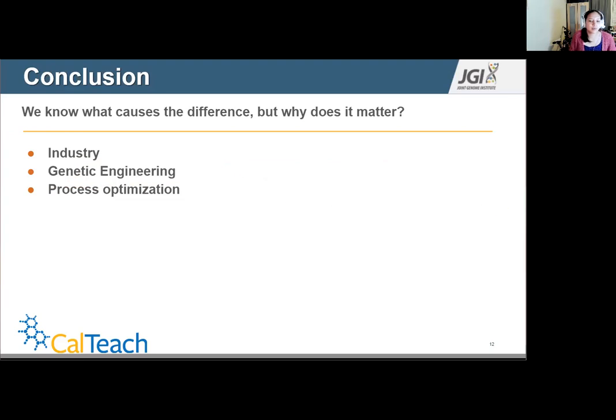Lastly, we have process optimization. And this is an industry term for efficiency. Whether you're making beer, producing biofuel, you want to know how to best improve your process for time and cost and energy efficiency.